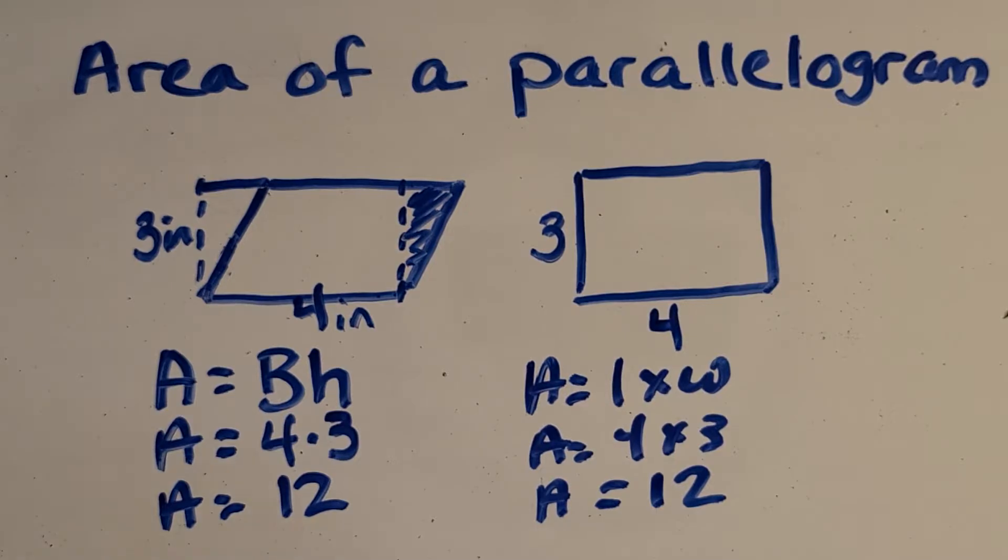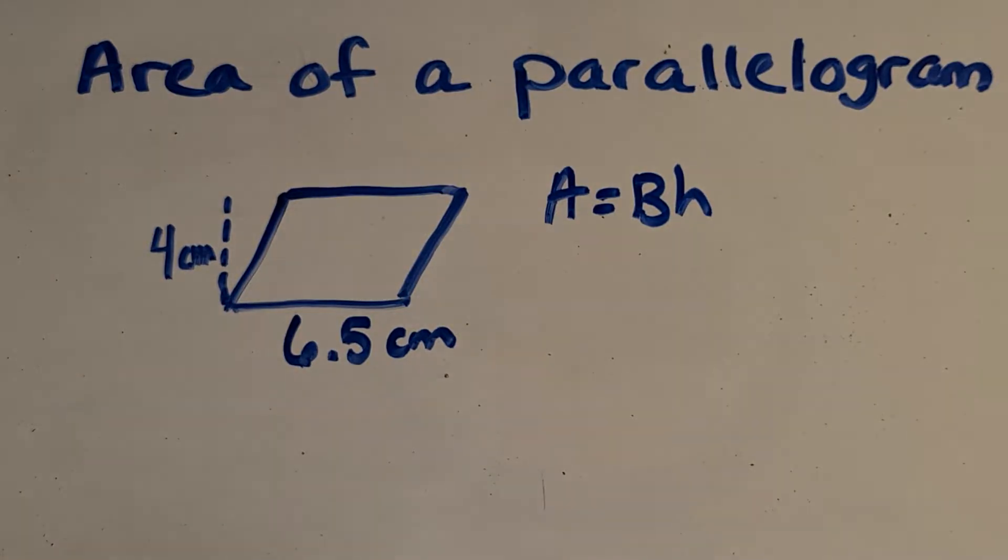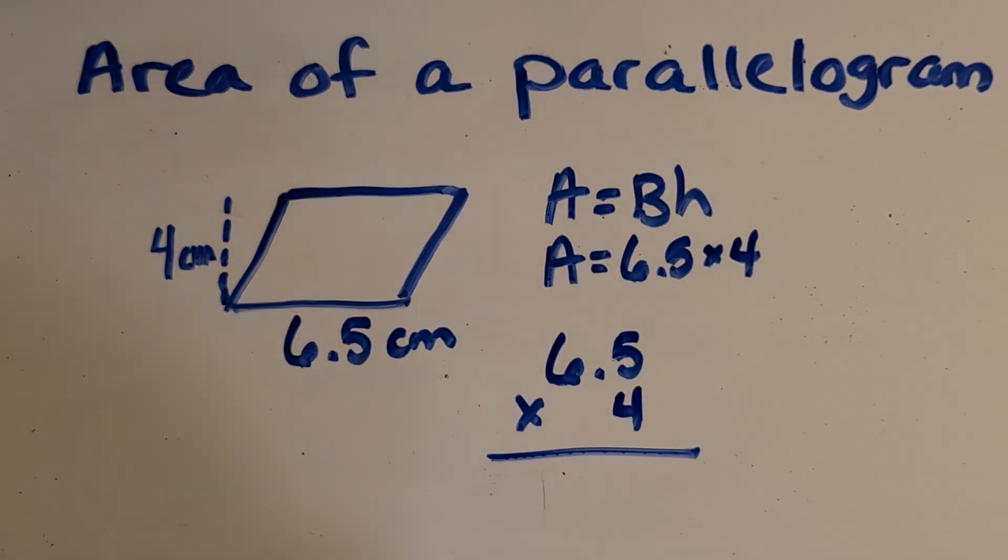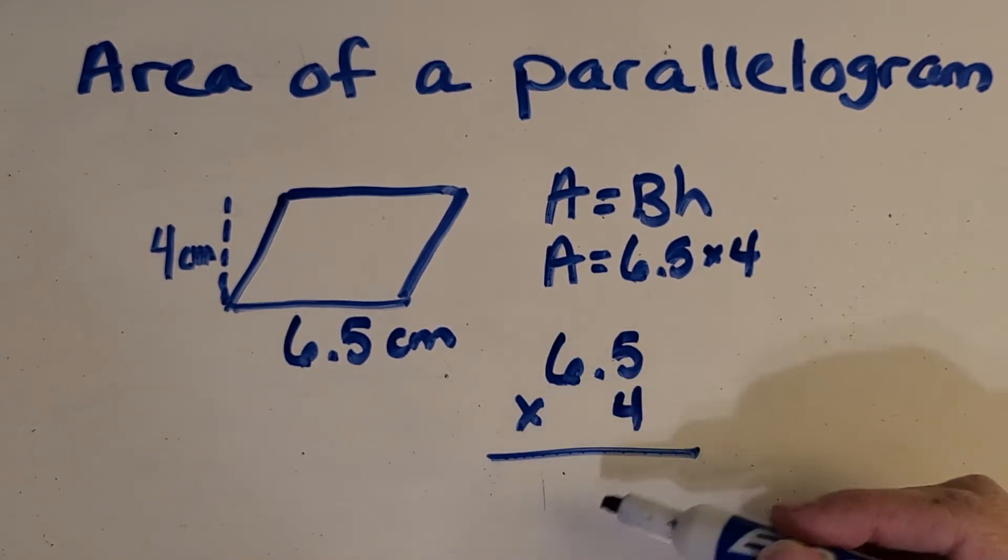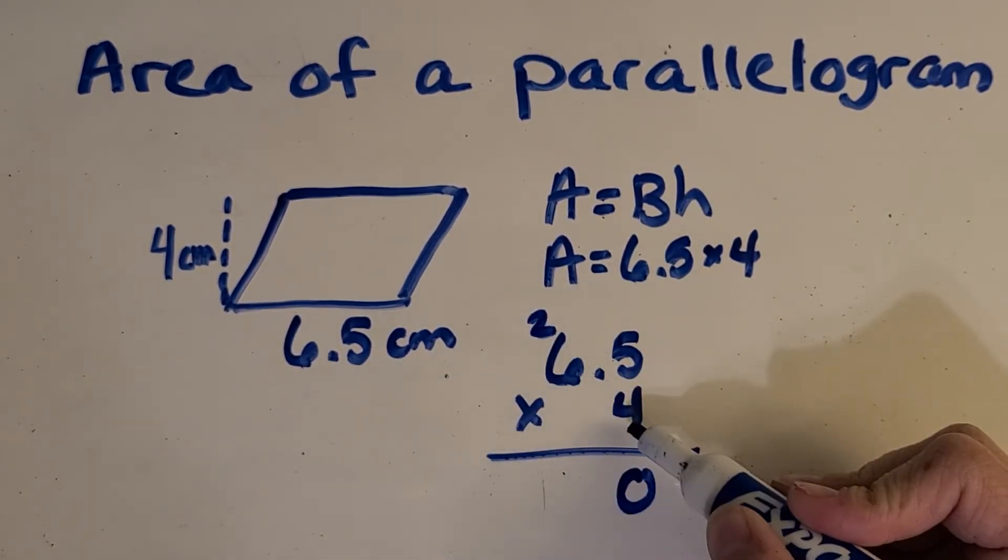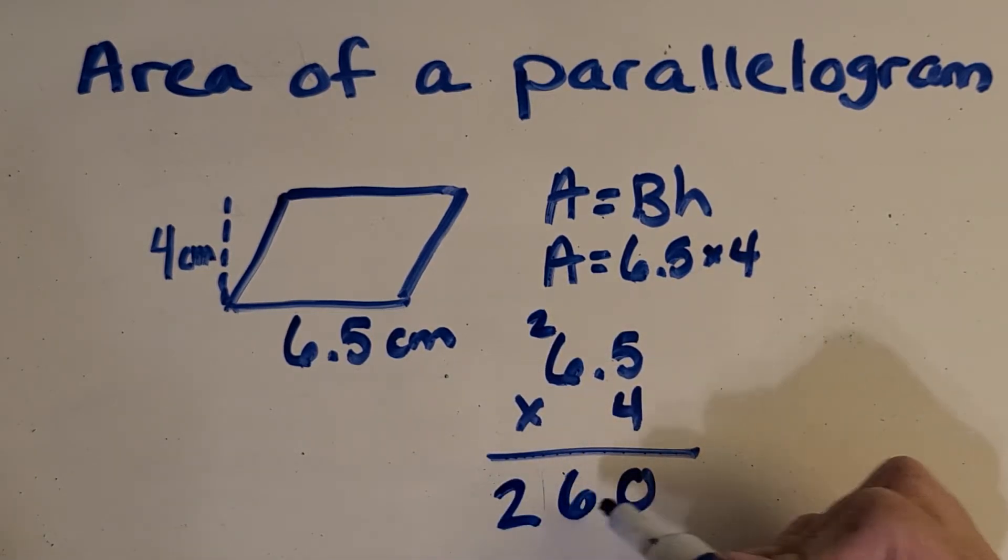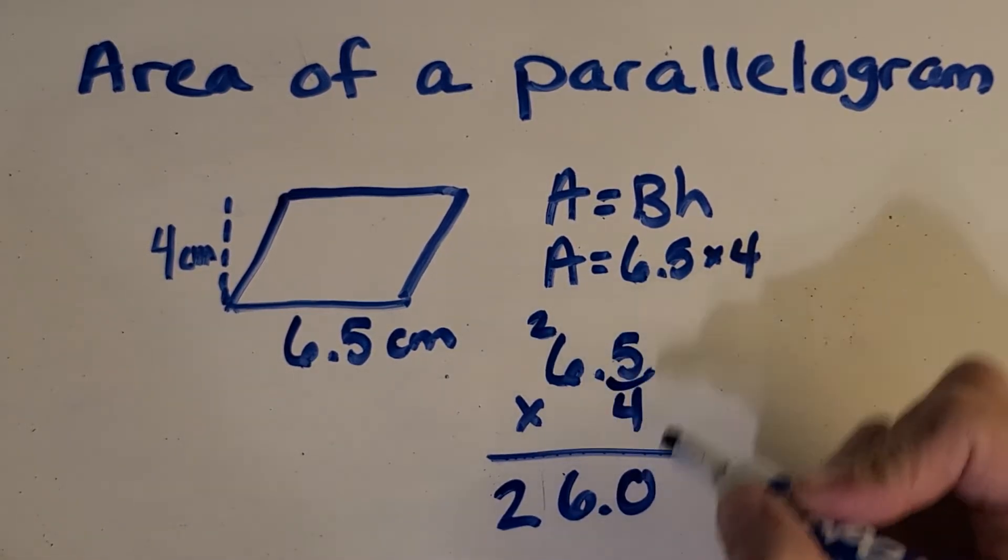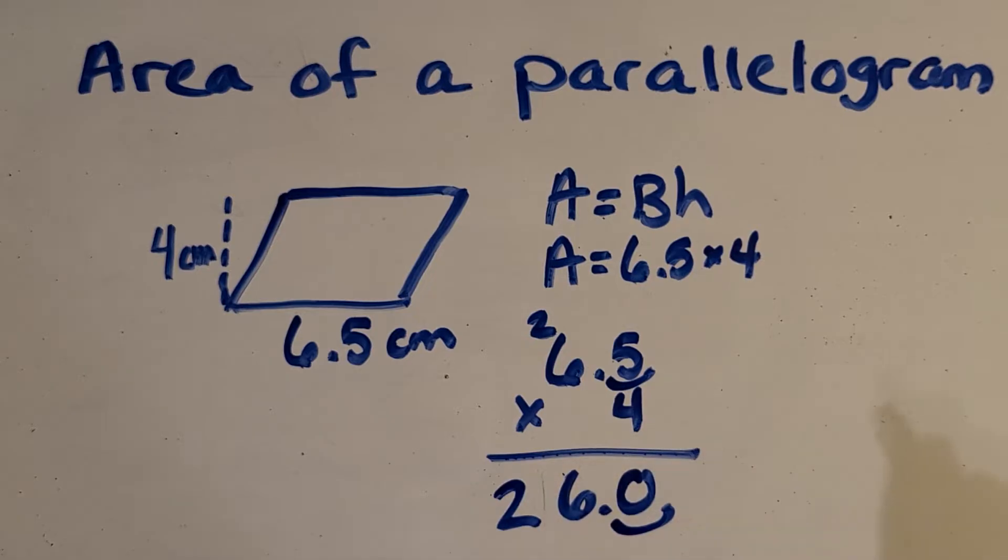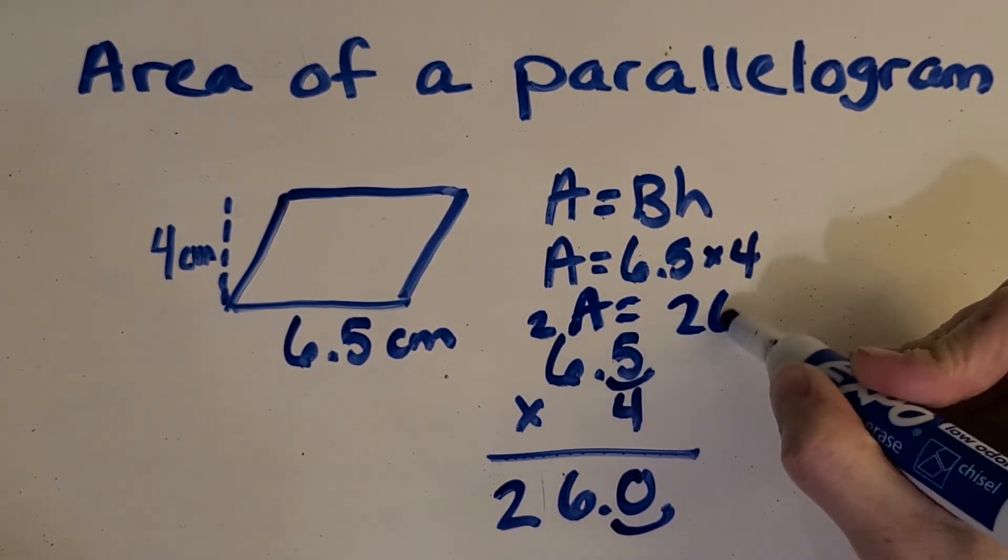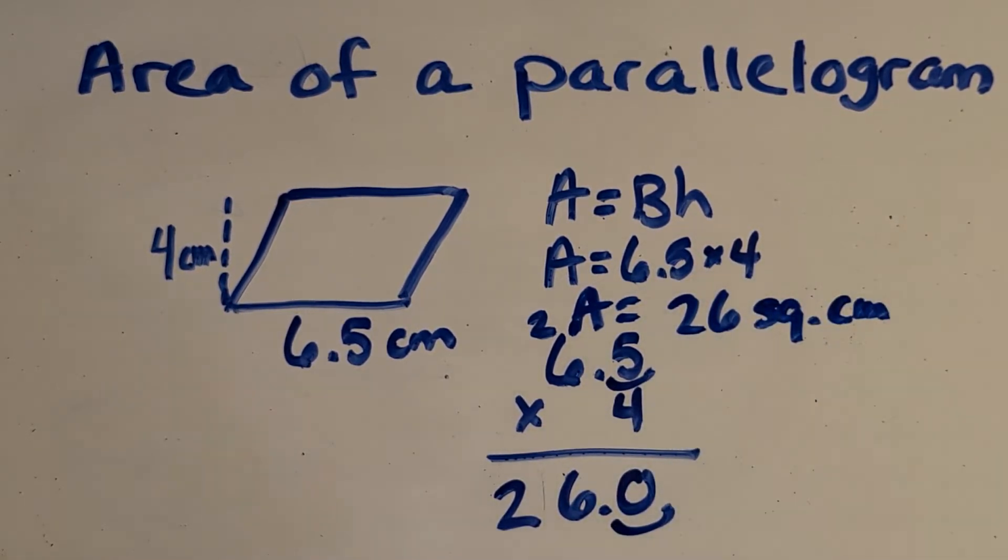All right, so let me give you another problem to practice. All right, here's your next problem. I have the formula area equals base times height, and I gave you the base is 6.5. The height is 4 centimeters. So I want you to pause the video, see if you can find the area of this parallelogram. All right, let's check your thinking. I'm gonna do this algorithm really quick. Okay, 6 times 4 is 24 plus 2 is 26. All right, and I have one decimal place in my factors, so one in my product. So my answer is just the area is 26 square centimeters. Okay, great job.